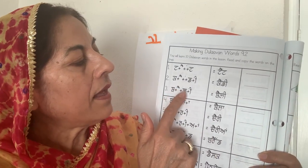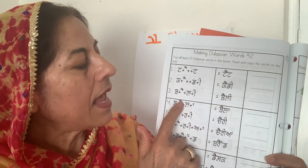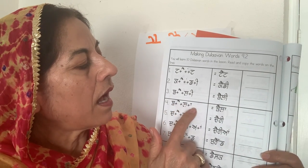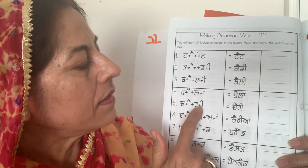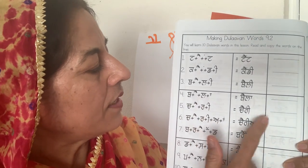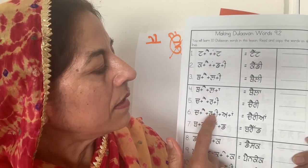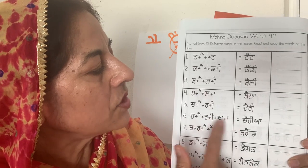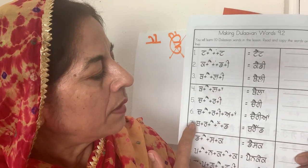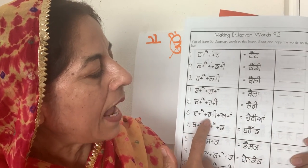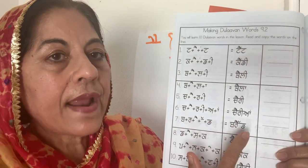Next word: Thali — T, A, U, E — Thali. Then Thala — T, A, U, A — Thala. Then Cherry — Ch, A, R, E — Cherry. Then Bread — Ch, A, R, E, A — with an Adak — Bread. If we didn't write the Adak, we would say 'Brad.' Brad is a different word — it means a thumbtack, which is not sharp at the back.